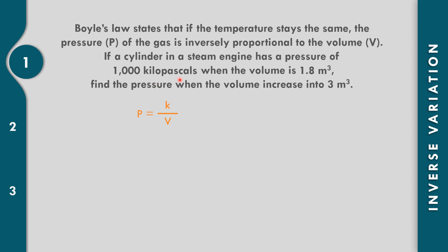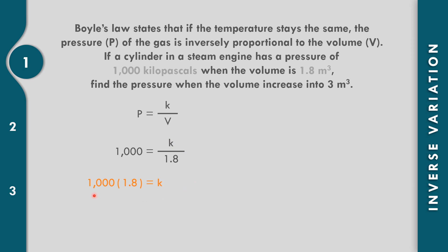The first value of pressure is 1,000 when the volume is 1.8. So, 1,000 equals k over 1.8. Let us multiply both sides by 1.8 — cancel on the right side. So, 1,000 times 1.8 is equal to k, or 1,800 equals k.